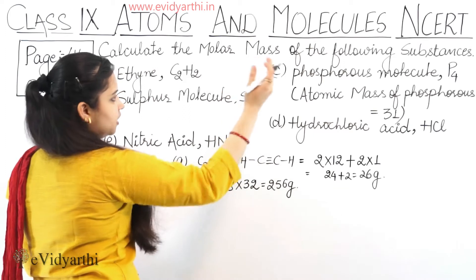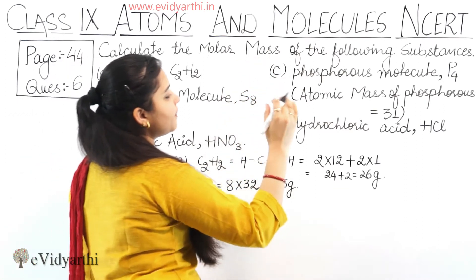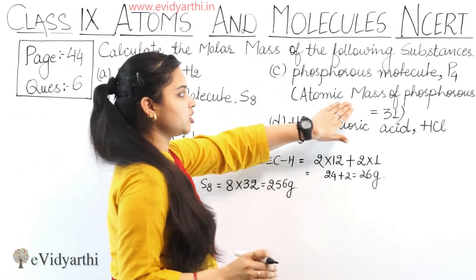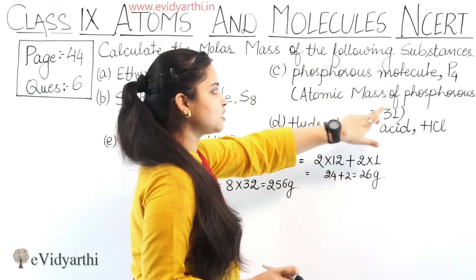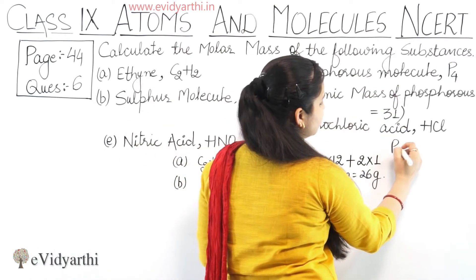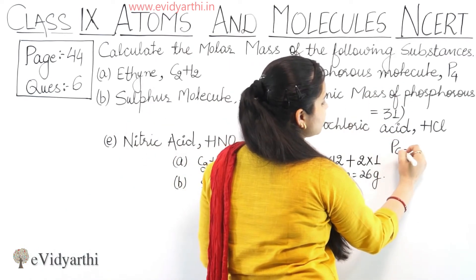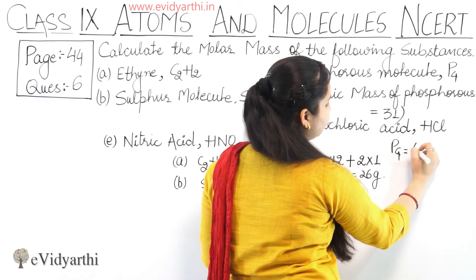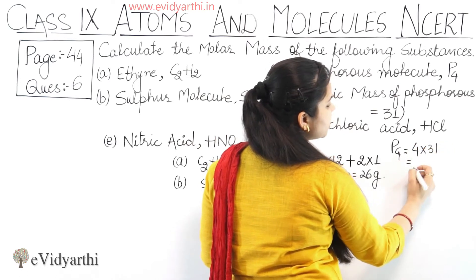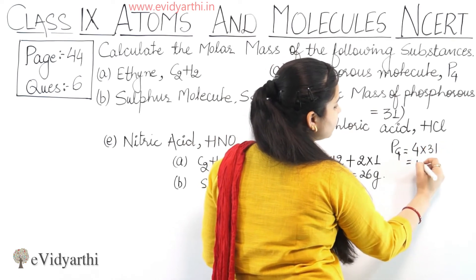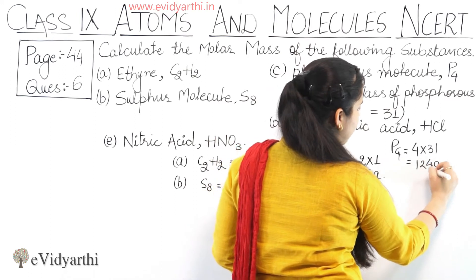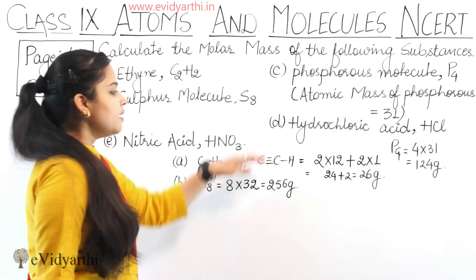Part C — phosphorus molecule, P4. The atomic mass of phosphorus is given in the question as 31. So the molar mass = 4 × 31 = 124 grams.